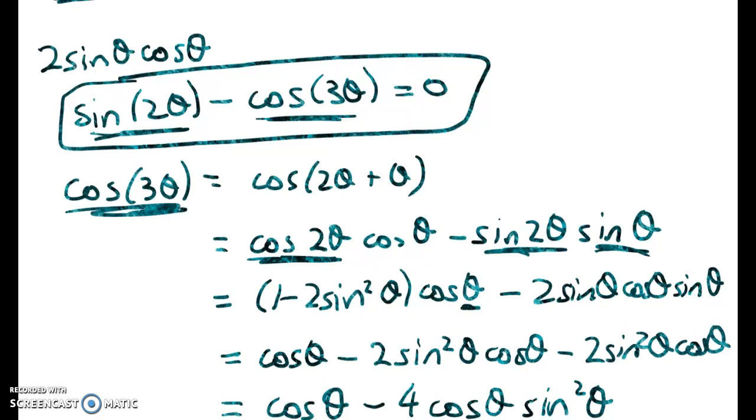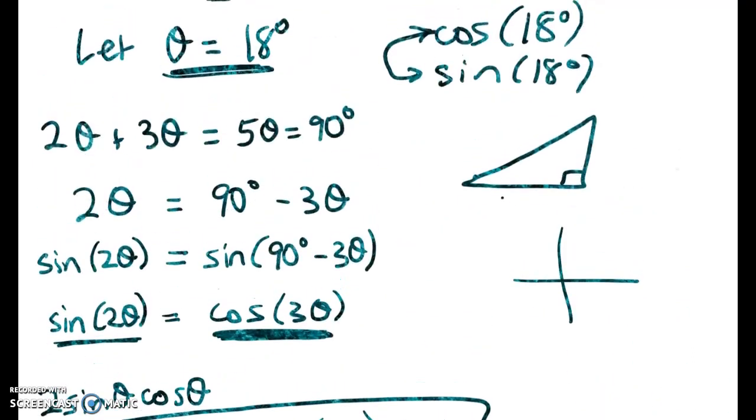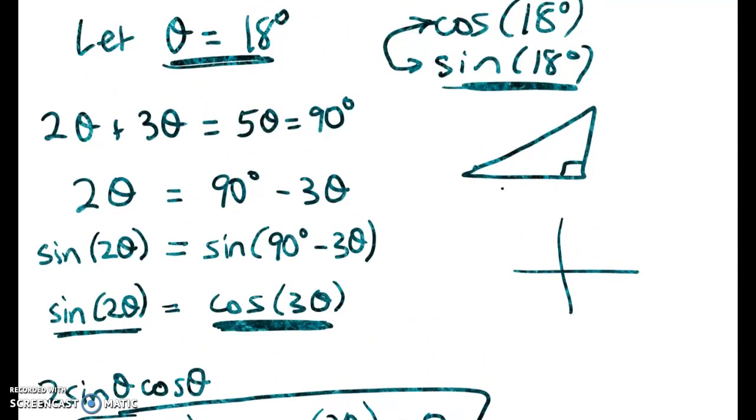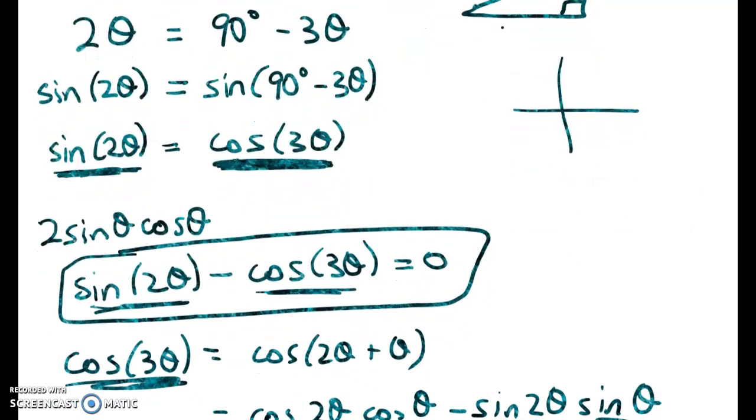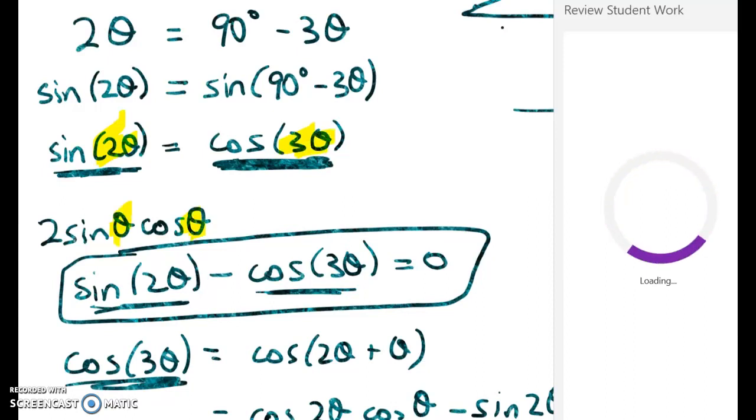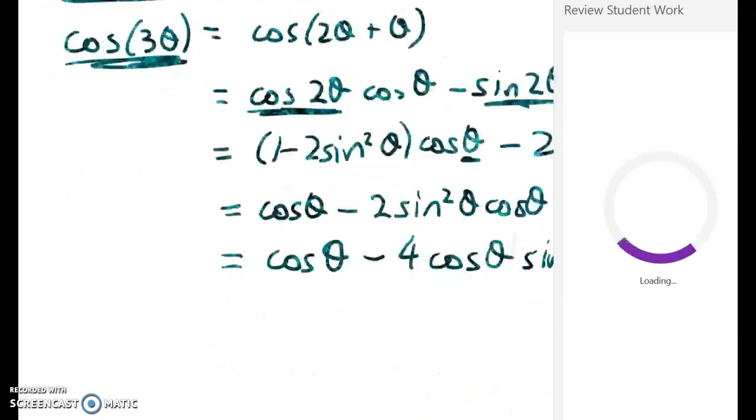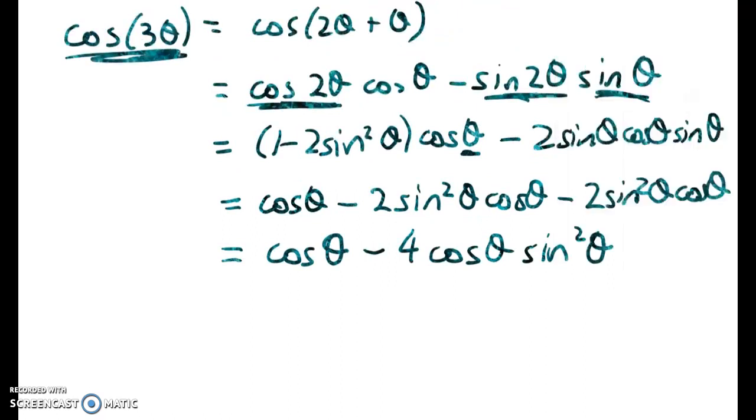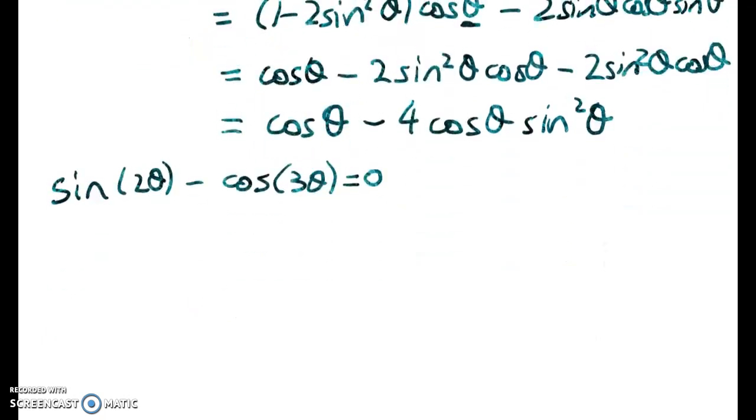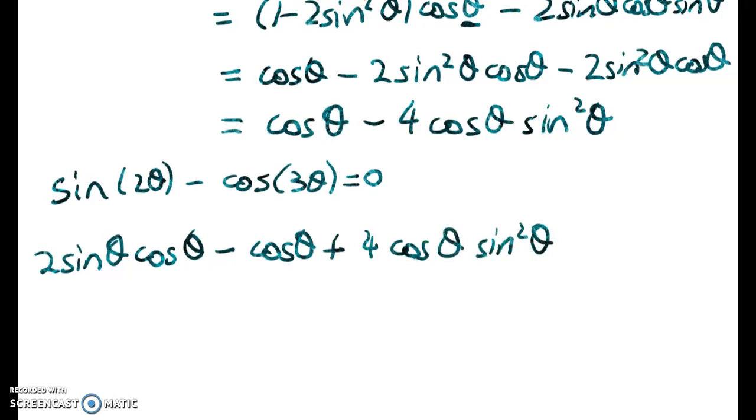Let me go back up the screen and just jog your memory with what we're doing. We started out with θ is 18 and we're trying to eventually end up with a sine of 18 or a cos of 18. So we got to here where sine of 2θ was equal to cos of this. Our goal is to make sure that we end up with—we don't want a 2θ, we don't want a 3θ, we just want everything in terms of θ. And then we're going to try and solve. So we've got sine of 2θ minus cos of 3θ is equal to 0. So it's time to substitute all the bits in. So 2 sine θ cos θ minus cos θ plus 4 cos θ sine squared θ is equal to 0.